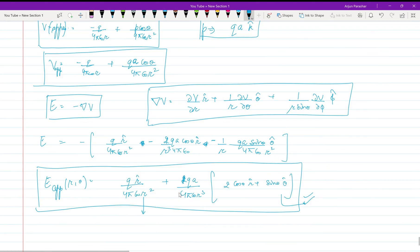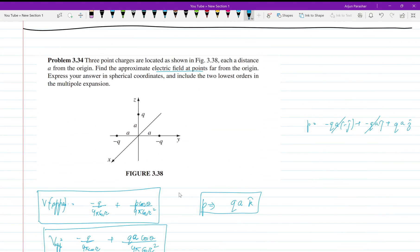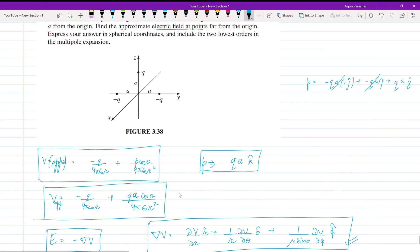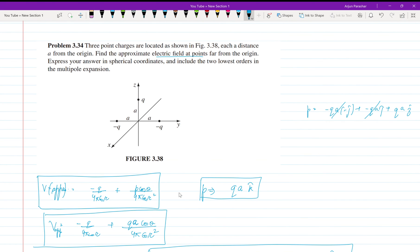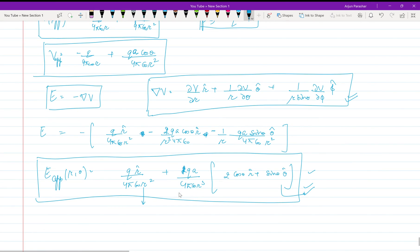That's all, I think this is all we need to find. Express your answer - yeah, we have expressed our answer in spherical polar coordinates. You need to remember the formula for gradient, then it is easy. And approximate electric field at points far from the origin - these are the points far from origin at some position far from the origin.